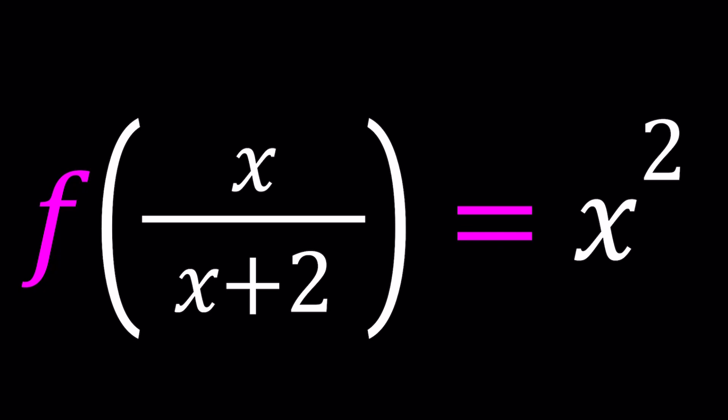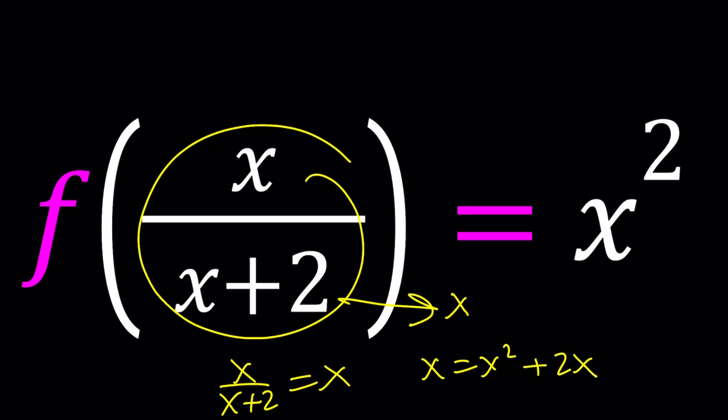Now to be able to find f of x from here, couldn't we just replace this whole thing with x, set it equal to x, and then just get the f of x from there? Well, if you replace x over x plus 2 with x, you're going to get a quadratic equation which will have numerical solutions. And if you plug them in, that's going to give you a numerical value. So that's not really going to help, even though it kind of looks like it's going to help.